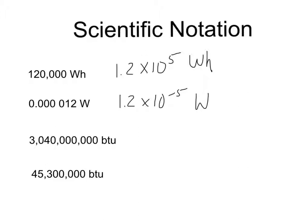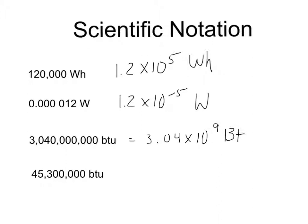Let's do a couple more examples. We have 3,040,000,000 BTUs. We just move the decimal place over nine places, so it's 3.04 times 10 to the 9th BTU. For the last one, we move the decimal seven places, so it's 4.53 times 10 to the 7th BTU. Scientific notation is pretty straightforward.